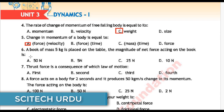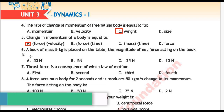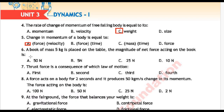Next question: A book of mass 5 kilogram is placed on the table. The magnitude of net force acting on the book is — Option A: 50 Newton, Option B: 5 Newton, Option C: 25 Newton, Option D: 10 Newton.